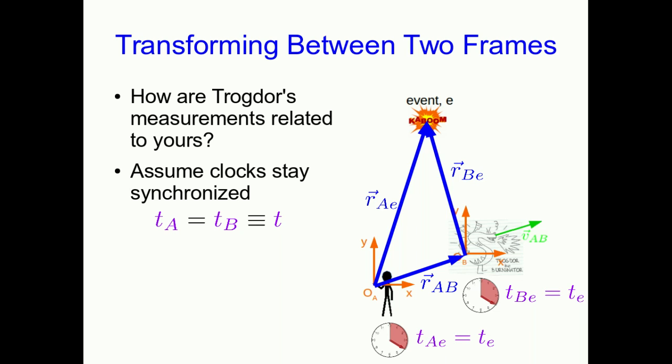And now to think about how the positions relate, the key thing is to notice this vector RAB, which is just the position of Trogdor's origin relative to your origin. And if you just look at this trio of vectors, you can see that there is a vector addition going on there, and so the three vectors are related like this. The final thing is that we can think of how this RAB relates to Trogdor's velocity and the time. Well, clearly RAB is just that velocity times TE since at time zero you are at the same location, and so we can just replace RAB in this equation like so.